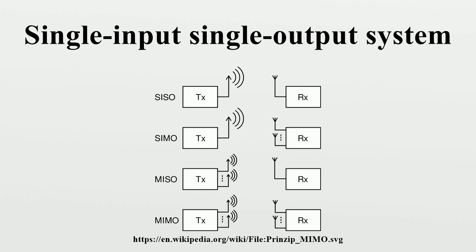Controllers can be designed through polynomial design and Root Locus design methods, to name just two of the more popular. Often SISO controllers will be PI, PID, or lead-lag.